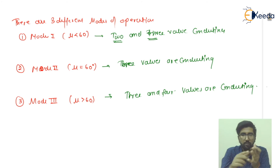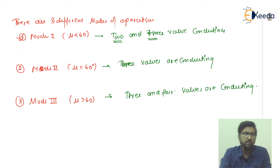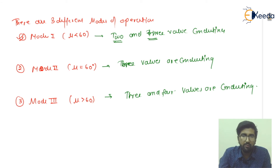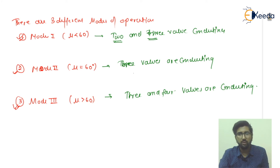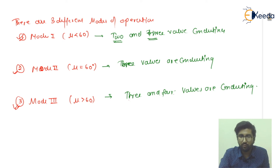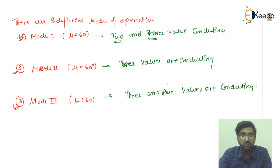To summarize the three modes: Mode 1 operates for μ less than 60 degrees and is the general case — either two or three walls conduct. Mode 2 has three walls conducting. Mode 3 has three to four walls conducting. Mode number one is the most commonly occurring case; modes two and three are less common but important to understand. We will move through each mode one by one in subsequent discussions.